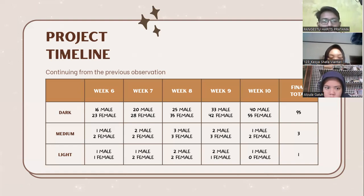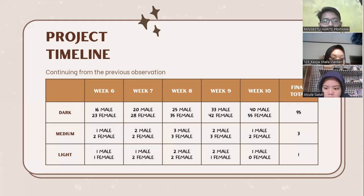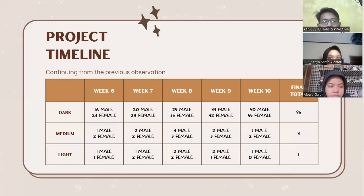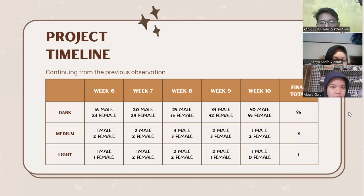In the slide, in week 6 there is 1 male and 1 female; in week 7 there is 1 male and 2 female; in week 8 there is 1 female and 2 female; in week 9 there is 1 female and 1 female; in week 10 there is 1 female and 0 female. The final total is 1. The most population is in the dark treatment.